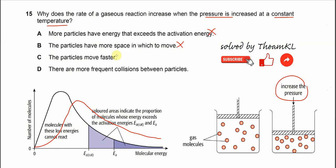Option D: There are more frequent collisions between the particles. This is true. When the pressure increases, the volume is smaller, the number of particles is still the same, so the collision between the particles increases, and of course, it will increase the rate. That's why the answer is D.